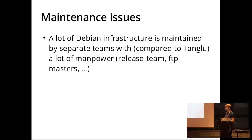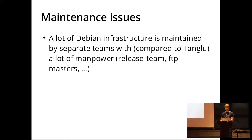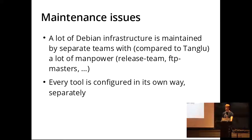There are also maintenance issues, because as much as teams complain inside Debian that they don't have enough manpower, they actually have a lot more manpower compared to a derivative that's just started and has about four members. They have a lot of teams which maintain separate parts of the infrastructure — the Release Team dedicated to maintaining Britney and doing transition tracking, and the FTP masters who only deal with DAK. They are experts in their field, while you, if you start a derivative, need to basically know everything and maintain everything — which is difficult, especially since every tool is configured in its own way. And since Tanglu was doing a lot of releases, we had to basically adjust every configuration for every single release, which is annoying.